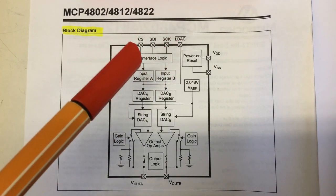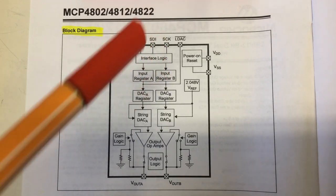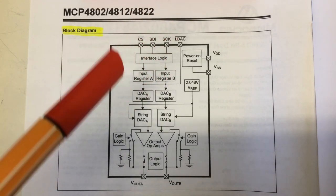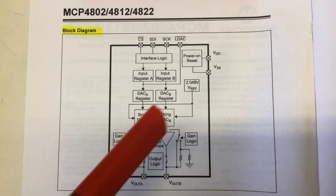And the internals are the same for the 4812 or 4802. We have an SPI interface only directional. So there's only a slave data in, no slave data out. And that interface loads two registers, one for each DAC.